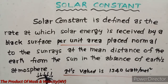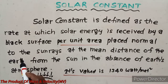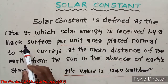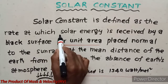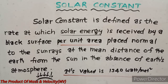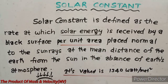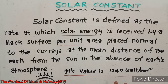The black surface receives solar energy per unit area, placed normal to the sunrise, at the mean distance of the Earth from the Sun, in the absence of Earth's atmosphere. Its value is 1340 watts per meter square.